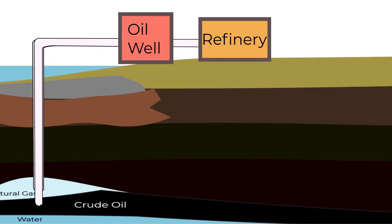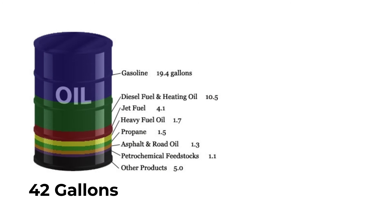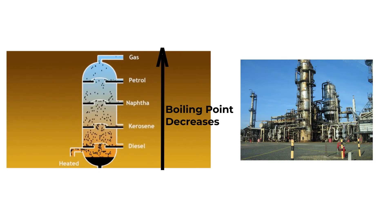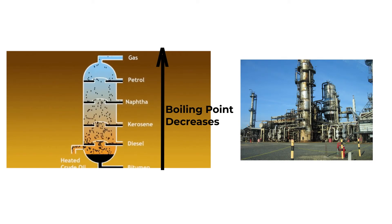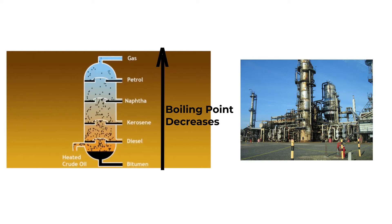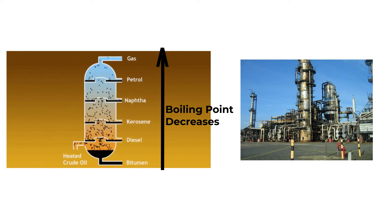Petroleum, which is the liquid form of fossil fuel, is brought to oil refineries from oil rigs and wells. Since petroleum is a mixture of different types of fuels, it is not only refined but distilled as well. The different components of petroleum have different boiling points, and the distillation process makes use of this property.